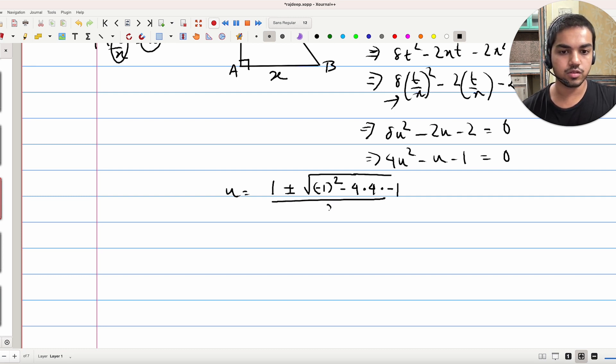Whole divided by 2 into 4, which is just 8. We have 1 plus minus root over 17 by 8. So it's clear that U cannot be negative.